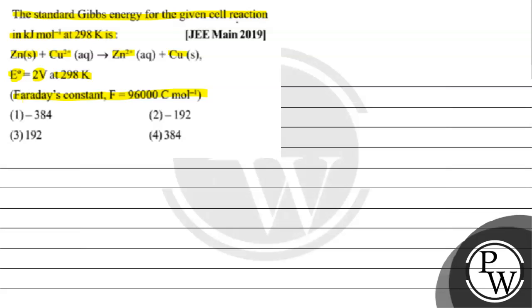Option 1 is minus 384. Option 2 is minus 192. Option 3 is minus 192. Option 4 is minus 384.